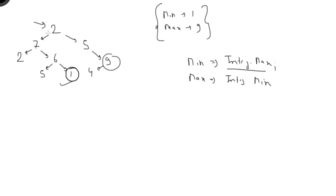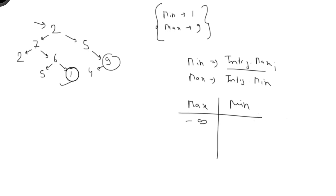In pre-order traversal, we first check the current node: if this value is greater than the current maximum, update the maximum. Similarly, if this value is less than the current minimum, update the minimum. At the start, maximum is negative infinity (Integer.MIN_VALUE) and minimum is positive infinity (Integer.MAX_VALUE). For any node, we check greater-than for max and less-than for min, then recurse left and right.